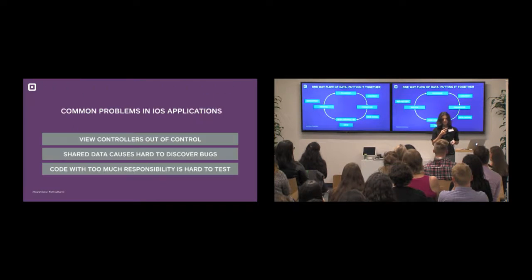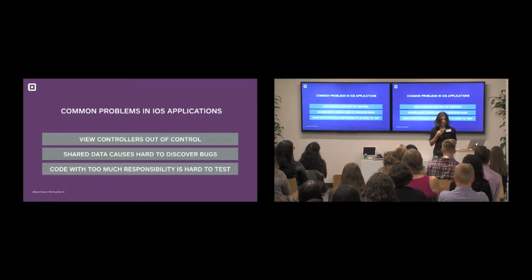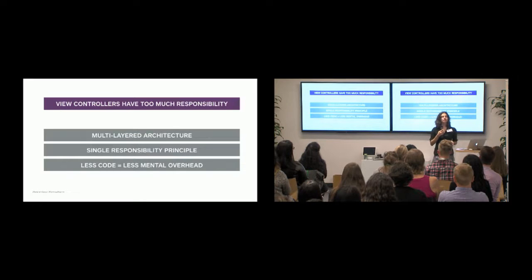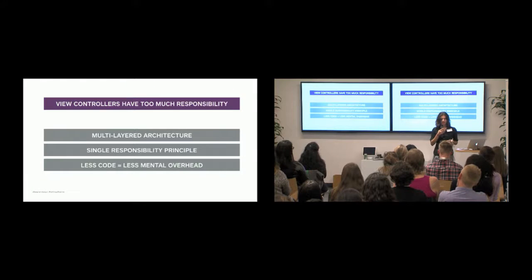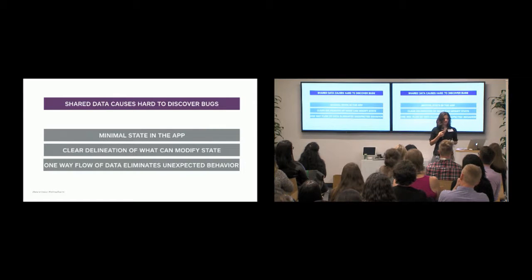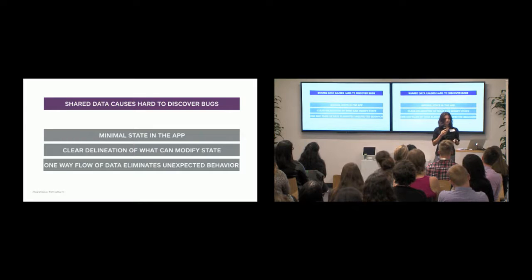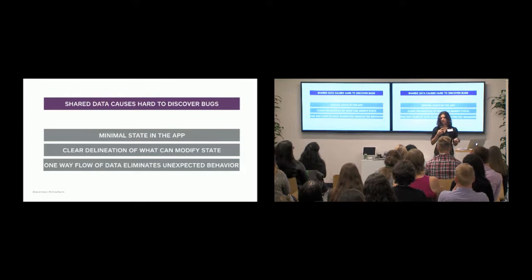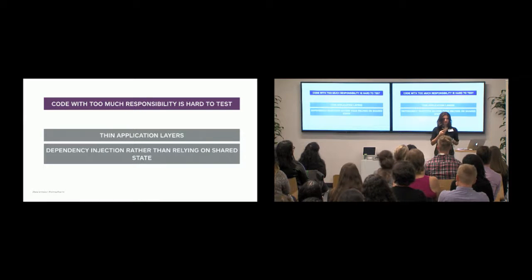Here it is all together once again. To solve the issue of view controllers getting too large and overreaching, we developed a multi-layered application where each layer of the app has a clear responsibility. Additionally, by structuring our code with immutable data, we were able to eliminate update code focused on dealing with when data changes. To avoid the side effects of sharing data, we have minimal state in the app and a clear delineation of what can and cannot modify state. Because we have so many layers of organization, it's really easy to add new people to the project since they have a clear example of what goes where. This architecture also helps us have easier to write and more comprehensive tests because each application layer is small and has limited responsibility, leading to fewer possible states overall.